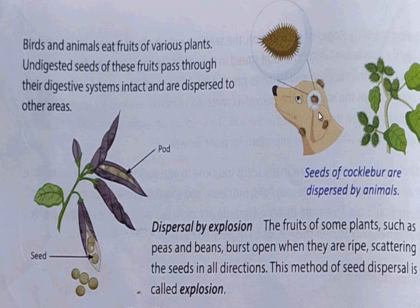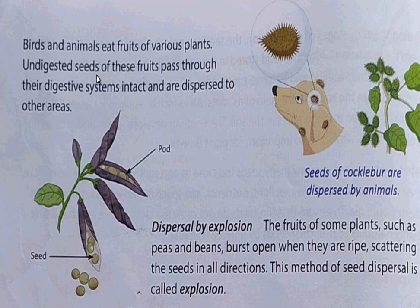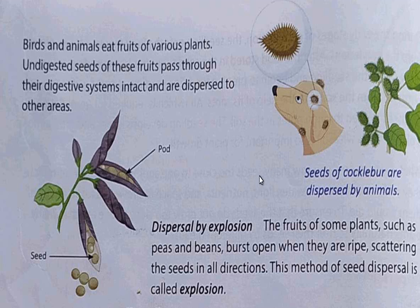When a sheep or a dog — animals — pass through a plant, the hooked seeds get stuck on their skin. When they roam anywhere, the seeds fall off and you can see the same plant growing there. Birds and animals also eat fruits of various plants. Undigested seeds of these fruits pass through their digestive system intact and are dispersed to other areas.